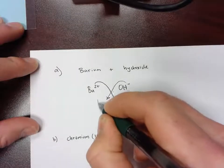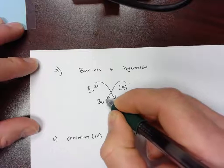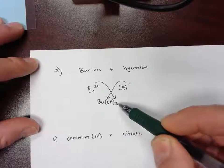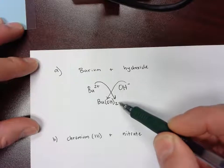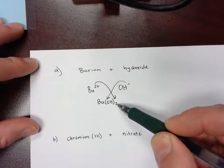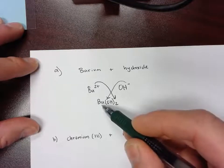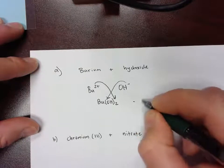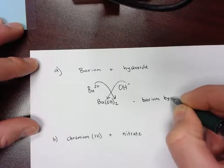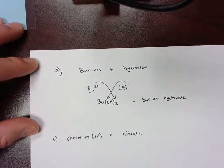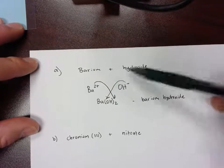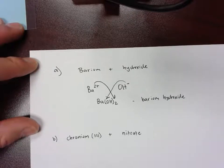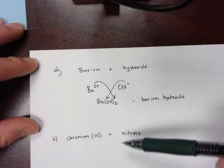When we put these together in a compound, we're going to draw our arrows and switch the superscripts. The one will go with the barium and then the two will go with the hydroxide. So it should be Ba and then parentheses OH2. And again I have to use parentheses because this is a polyatomic ion and there are multiple ions. So it's two ions in this case that go with the one barium. That's the formula, and then if I was going to name this it would just be barium hydroxide.